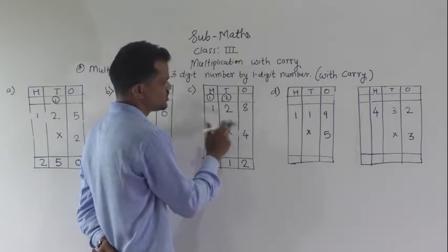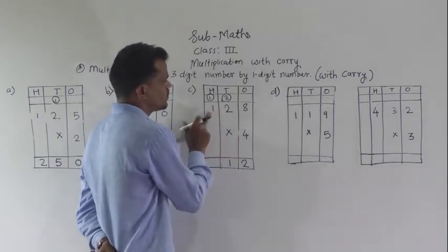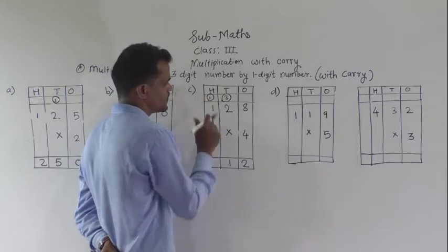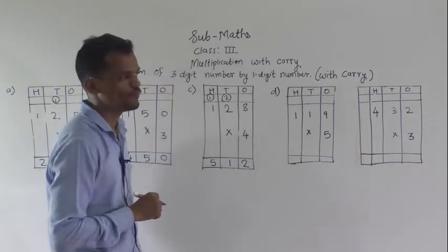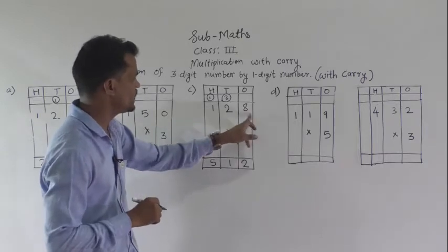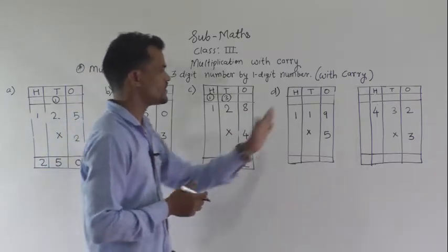Next step, multiply this hundreds digit by 4. 4 times 1 is 4. 4 plus 1 carry means 5. So, 512 is the product of 128 and 4.